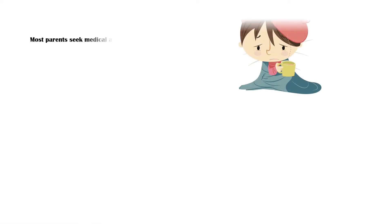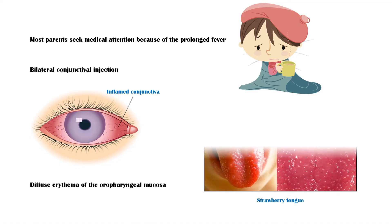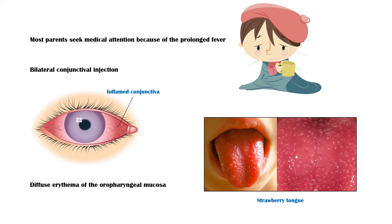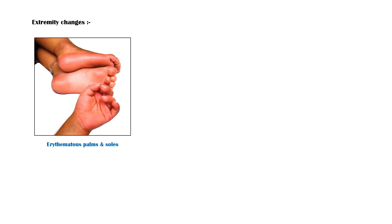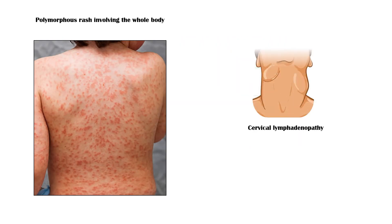Most parents seek medical attention because of the prolonged fever. Other principal clinical features include the following: bilateral conjunctival injection, diffuse erythema of the oropharyngeal mucosa, strawberry tongue, extremity changes including erythematous palms and soles and periungual desquamation, a polymorphous rash involving the whole body, and cervical lymphadenopathy.